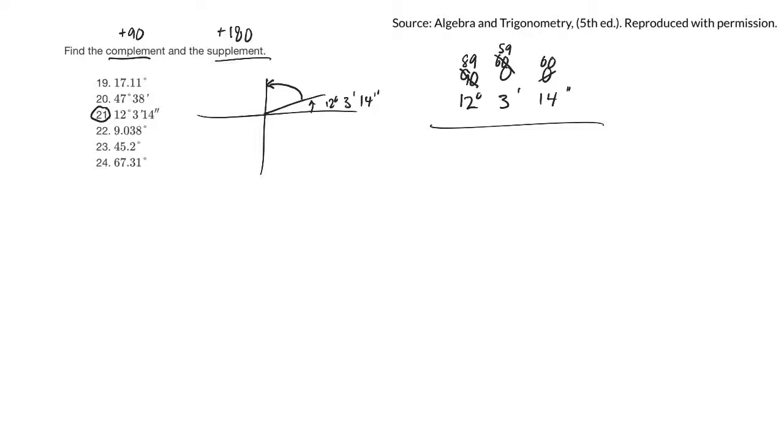So 60 take away 14 would be 46. 59 take away 3 is 56. 89 take away 12 is 77. So that would be the complement.